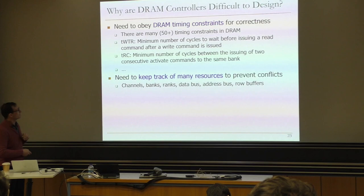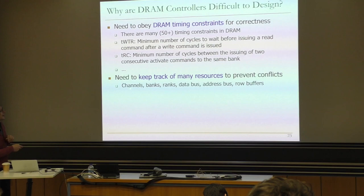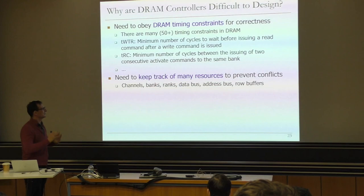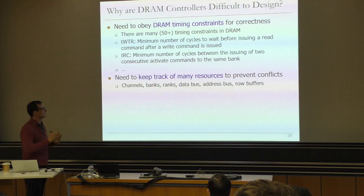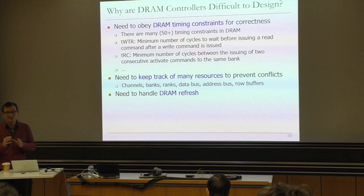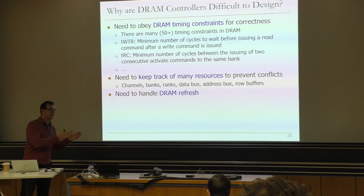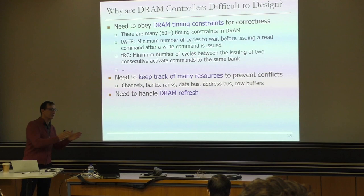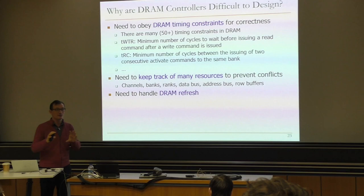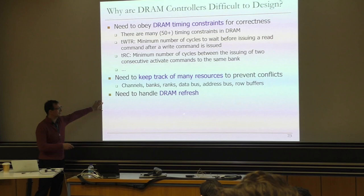You need to handle DRAM refresh on top of this. Even DRAM refresh has some flexibility — even though every row needs to be refreshed every 32 milliseconds, you have some flexibility in terms of when you can schedule those refreshes. You can pull in some refreshes early or pull out some refreshes late, which gives you flexibility in handling the schedule of requests. You need to manage power consumption and optimize for performance and quality of service in the presence of all of these constraints. Reordering is not simple, especially with very large buffer sizes.